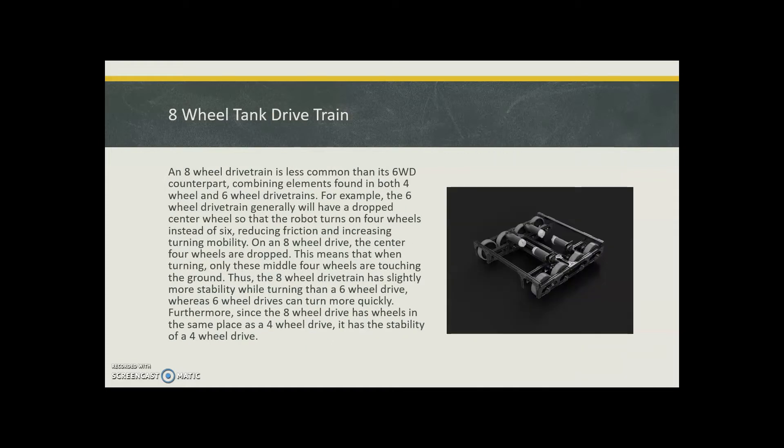Eight wheel drive. Eight wheel drive trains are less common than six wheel drive trains. It combines elements found in four wheel and six wheel drive trains. A six wheel drive train will have a drop center wheel so that the robot turns on four wheels instead of six. It reduces friction and increases turning mobility.